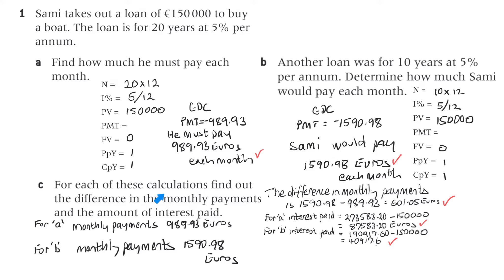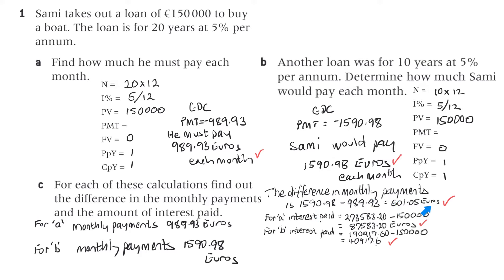Part C: for each of these calculations, find the difference in the monthly payments and the amount of interest paid. For A, the monthly payments were 989.93 euros. For B, the monthly payments were 1,590.98 euros. The difference in monthly payments is 601.05 euros.